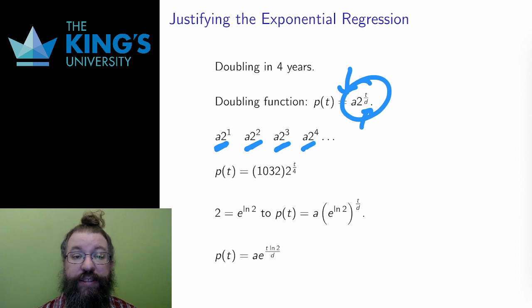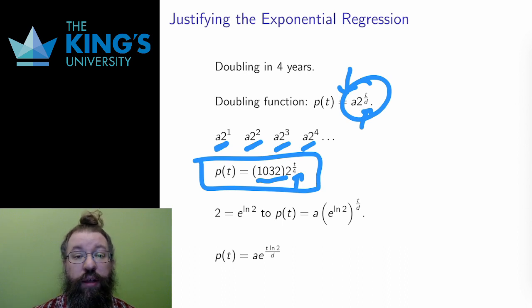In this case, the doubling period is, by my guess, 4 years, and the starting value is 1032. The function is therefore p(t) equals 1032 times 2 to the t over 4. This is indeed the function I used for the regression graph, and it matches pretty well.